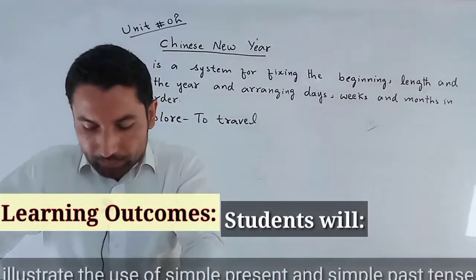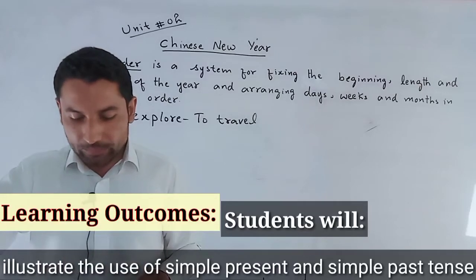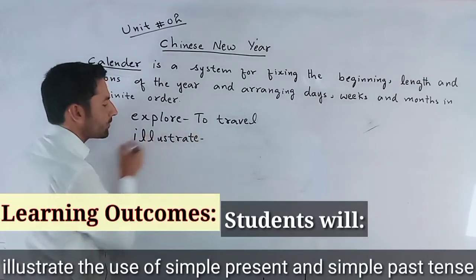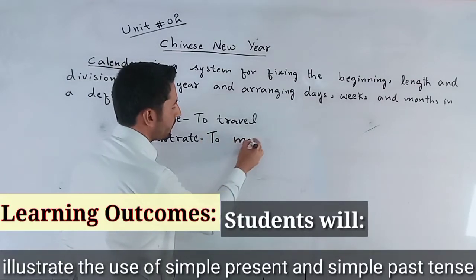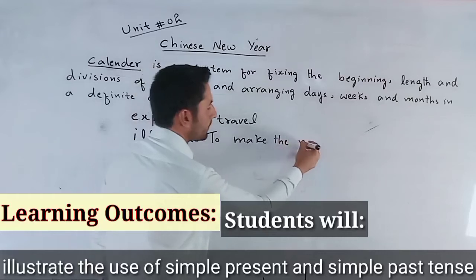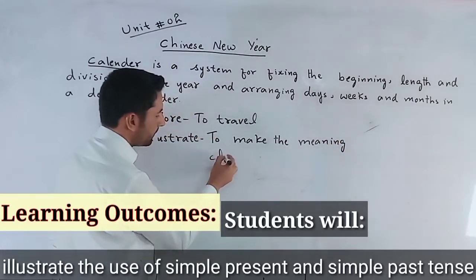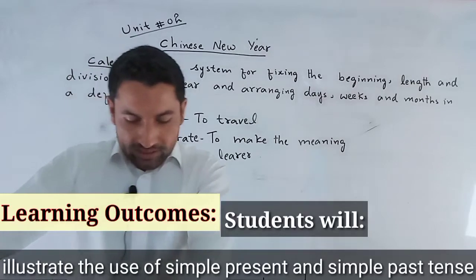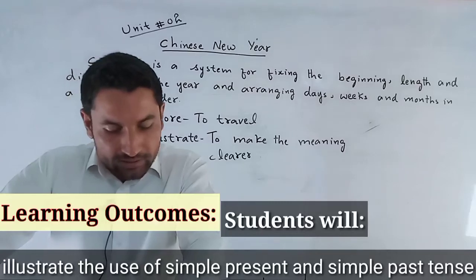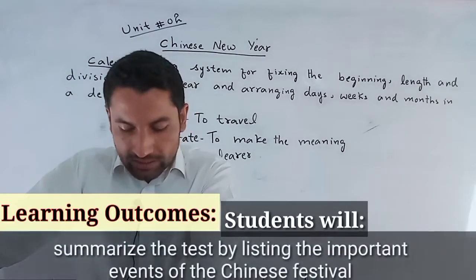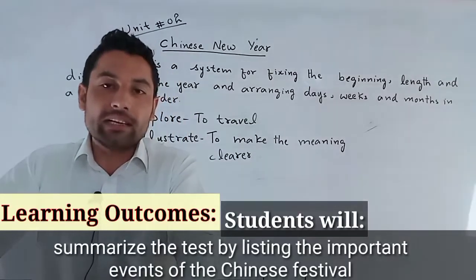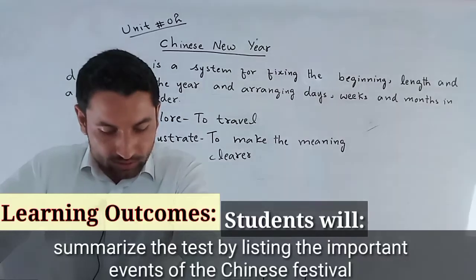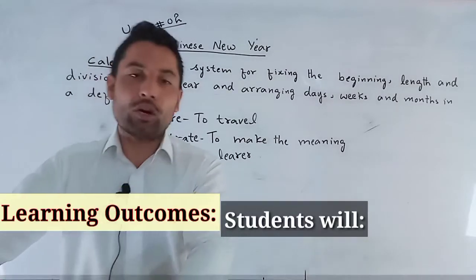Illustrate the use of simple present and simple past tense. The word illustrate means to make the meaning clearer by giving examples. So students will illustrate the use of simple present and simple past tense. Summarize the text by listing the important events of the Chinese festival. The lesson is about the Chinese New Year, so the important events of the Chinese festival are discussed. And produce an effective essay on a general topic.